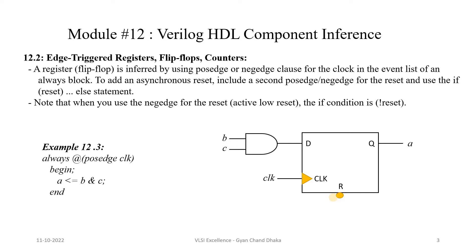Now let's see how a register or flip-flop gets inferred from RTL code. A flip-flop is inferred by using a posedge or negedge clause for the clock in the event list of an always block — the sensitivity list must have edge-sensitive signals. The sensitivity list can also include one additional asynchronous reset, which should also be posedge or negedge sensitive. When using a negedge reset signal, the if condition must use 'not reset' because the if condition always executes when the condition is true, so an active-low reset requires 'not reset' in the if condition.